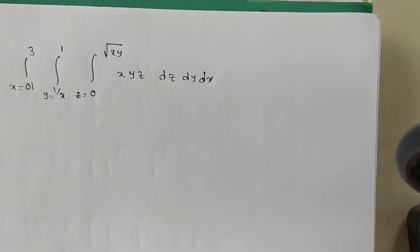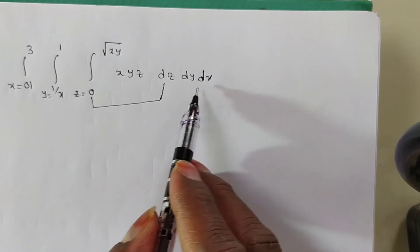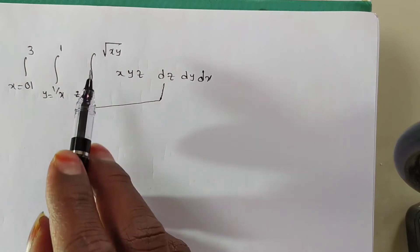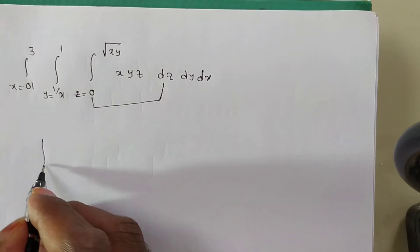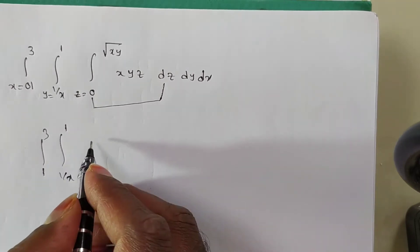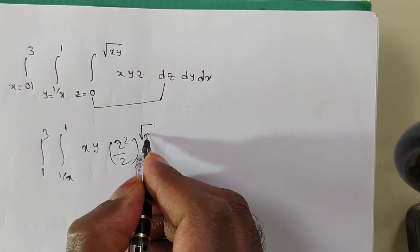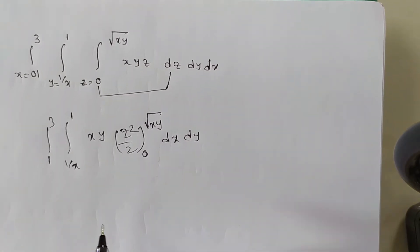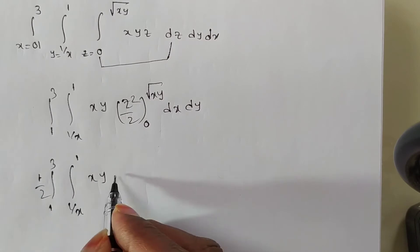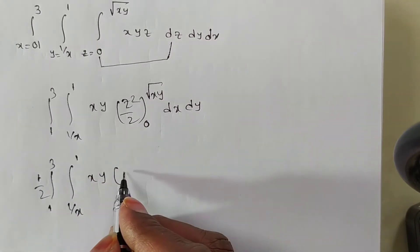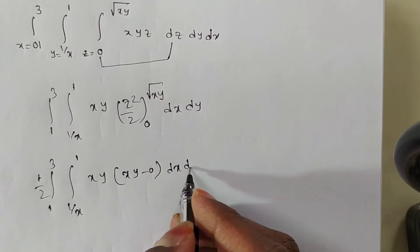Since z is a function of two variables, we integrate with respect to z first. Integral from 1 to 3, integral from 1/x to 1: x, y is constant while integrating with respect to z, so z integration gives z squared by 2, limits from 0 to square root of xy, into dy dx. This gives 1/2 times integral from 1 to 3, integral from 1/x to 1, and substituting: root squared cancels, giving x·y — and 0 lower limit is 0 — so we have x·y into dy dx.